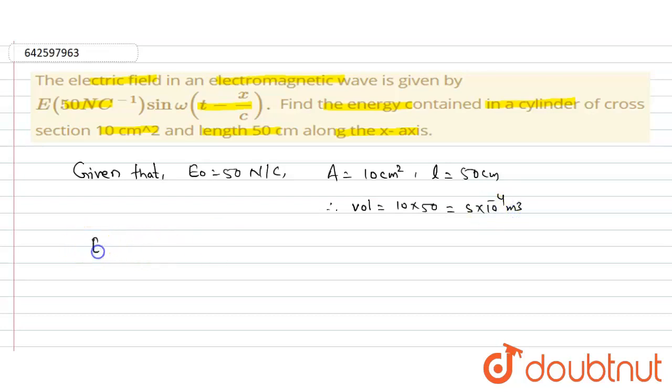We know that energy density is given by U_average = ½ε₀E₀², and we have to find the energy density.